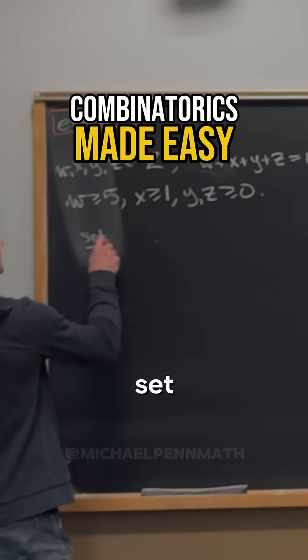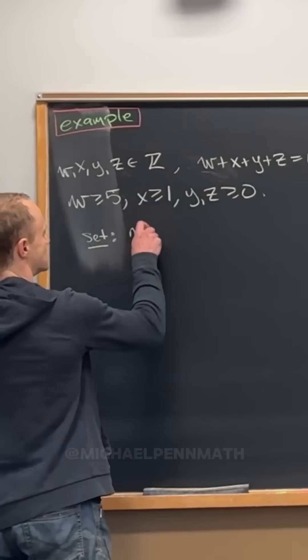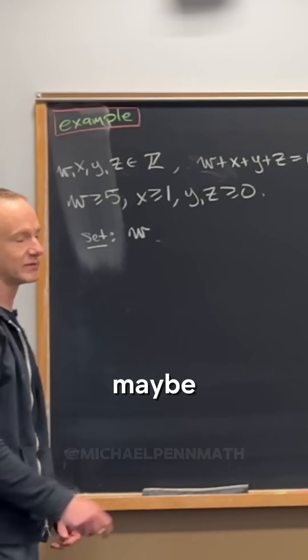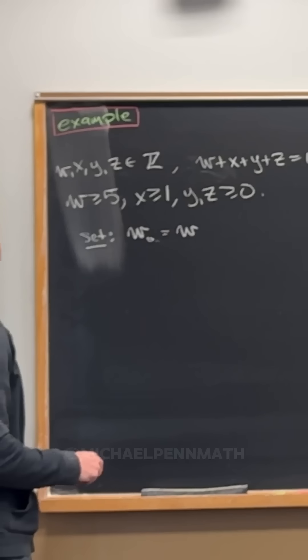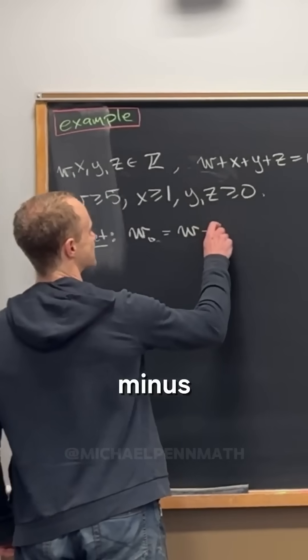Let's set, I don't know what variable we want, maybe w naught, is that okay, equal to w minus 5.